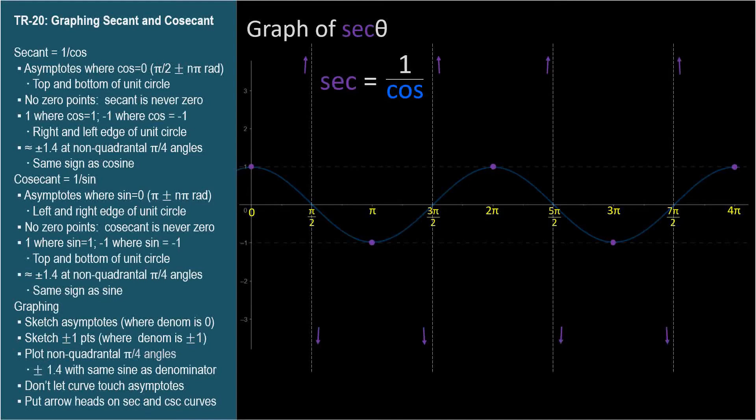Let's look at the pi over 4 angles midway between the quadrantal angles. At pi over 4, the cosine is square root of 2 over 2, whose reciprocal is about 1.4. The secant of all pi over 4 angles will be either positive 1.4 or negative 1.4, depending on the quadrant, as shown.